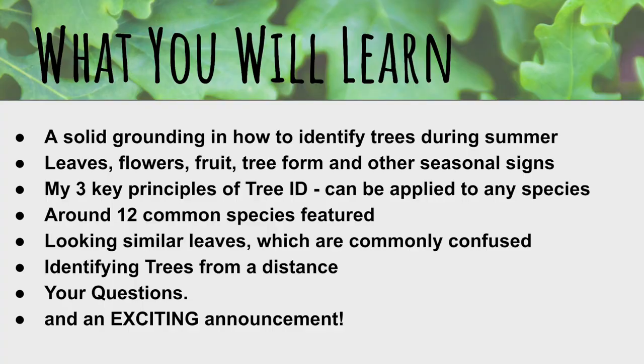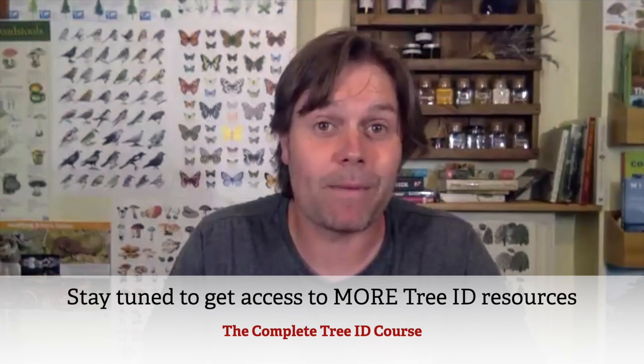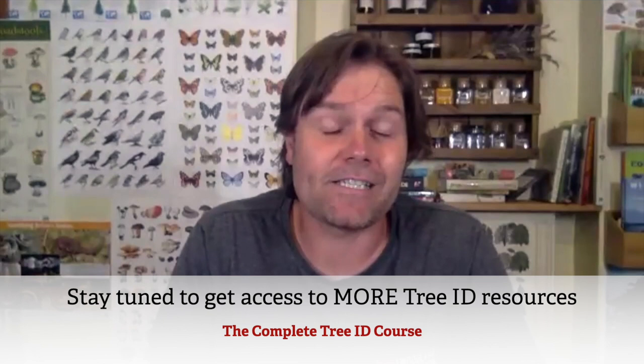What are we going to learn? You're going to come away with a solid grounding in how to identify native and naturalized trees during the summer months. We'll look at features including leaves, flowers, fruit, tree form, and other seasonal signs. I'll share my three key principles of tree identification — good hacks you can use any time of year. We'll feature around 12 commonly found species, look at similar leaves and how to tell them apart, and there'll be an exciting announcement about a big tree ID resource I've created.